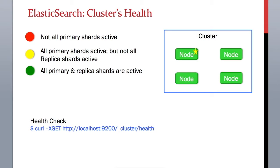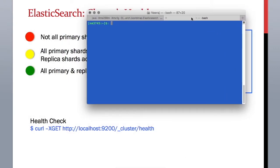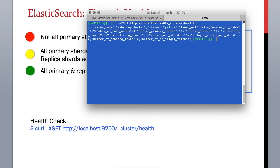Now let's check out how we can monitor the health of our cluster. Let's bring up our terminal and type this command: curl -X GET. Remember, this is the location and port of the Elasticsearch which we installed in our previous lessons. We can invoke the API endpoint _cluster/health, which will show you the health of your cluster.